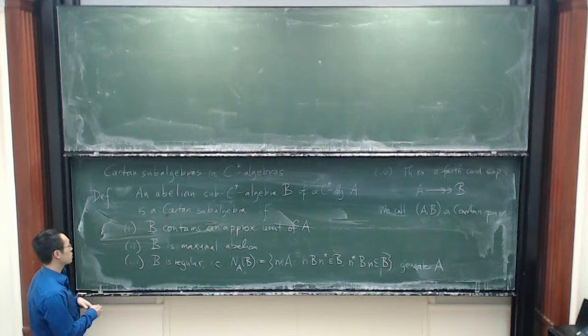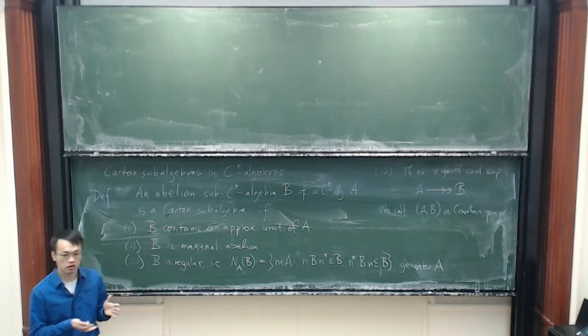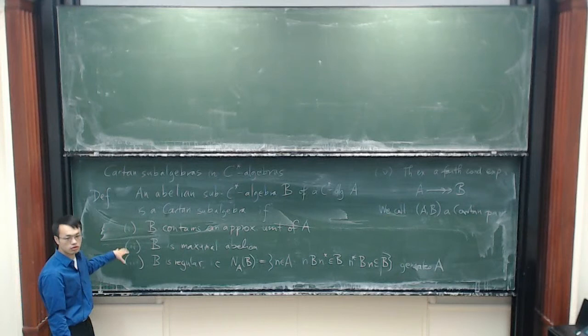As I said before, there is a notion of a Cartan pair or Cartan subalgebra in the von Neumann context which is older than this one, and if you compare them you see that this is really the C*-algebraic version of that — it is very analogous.